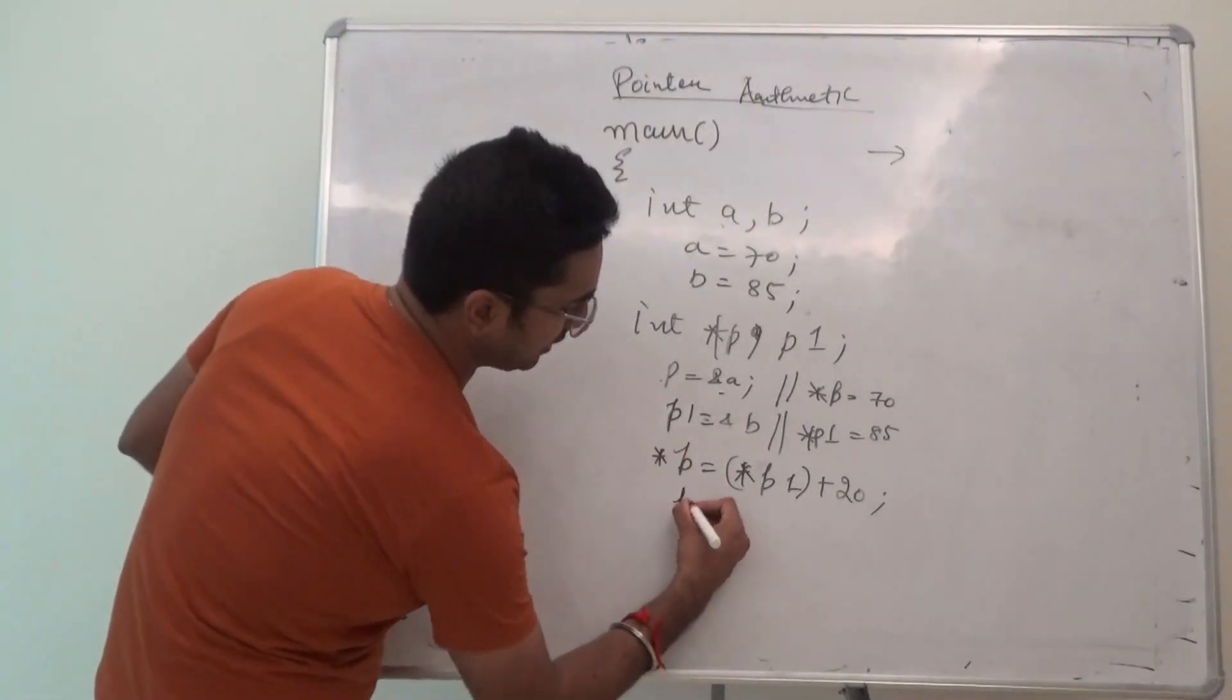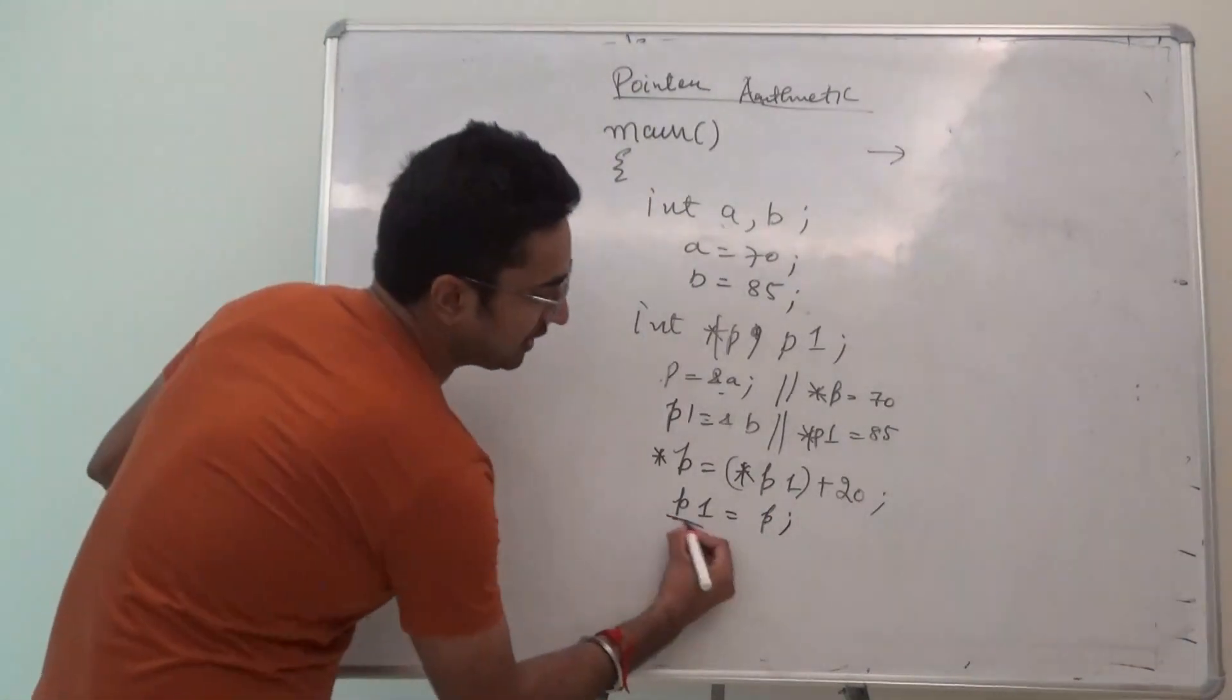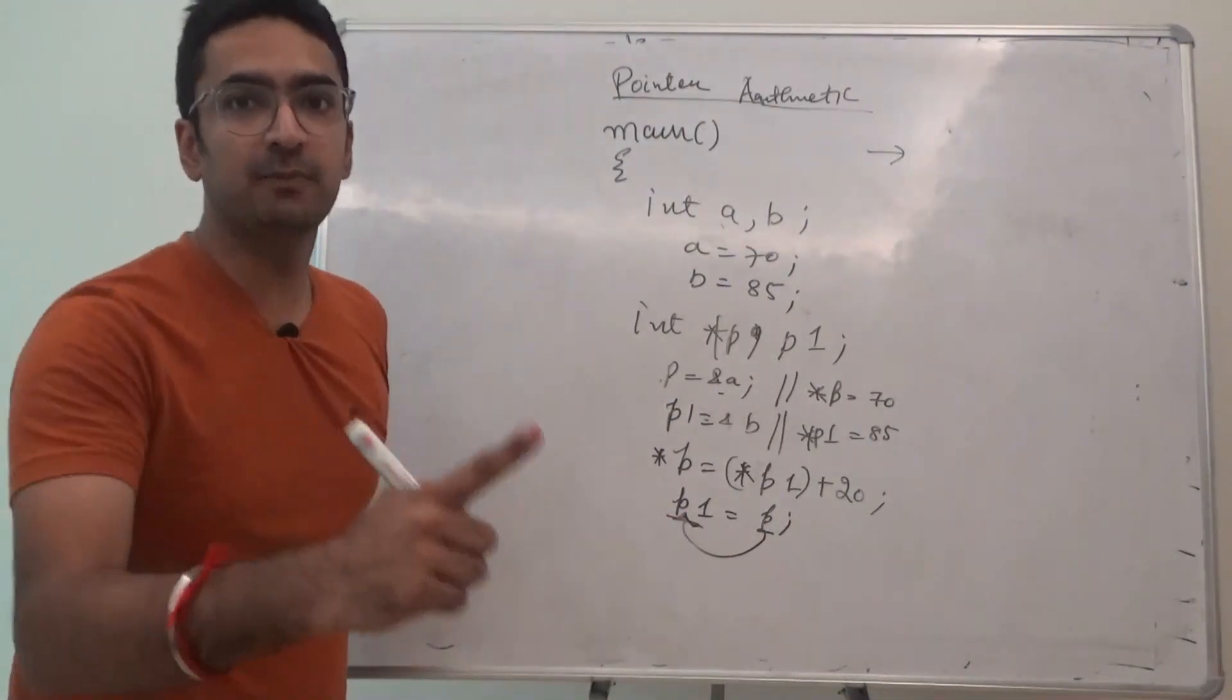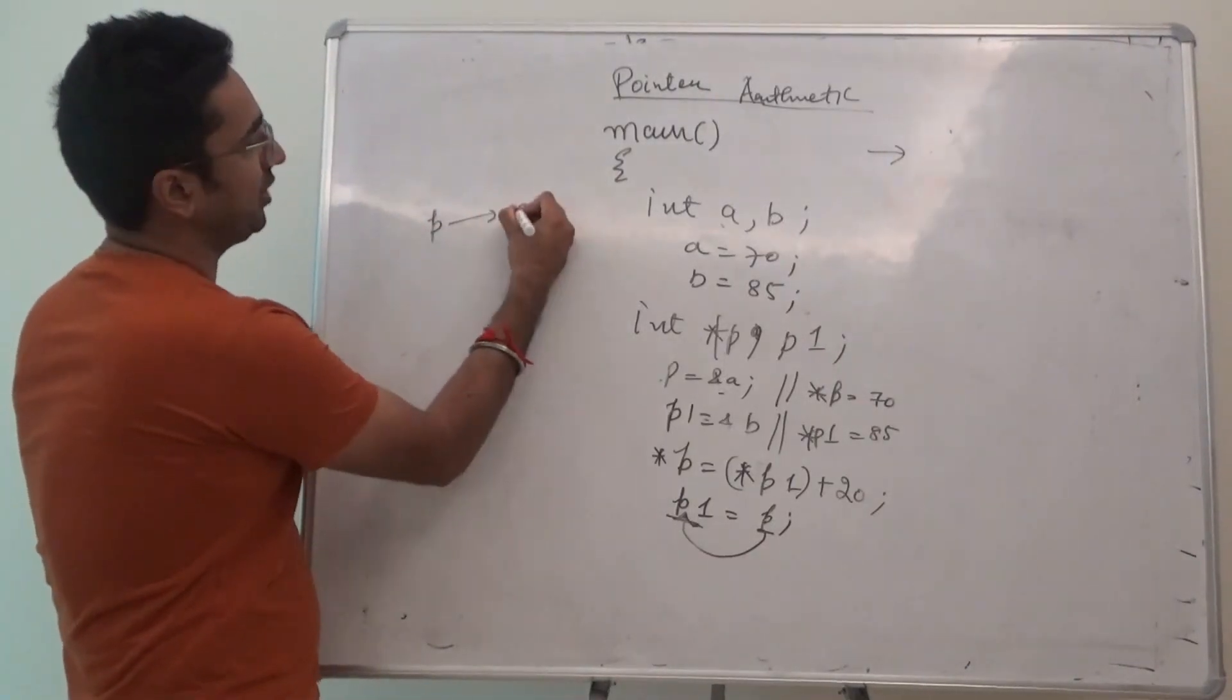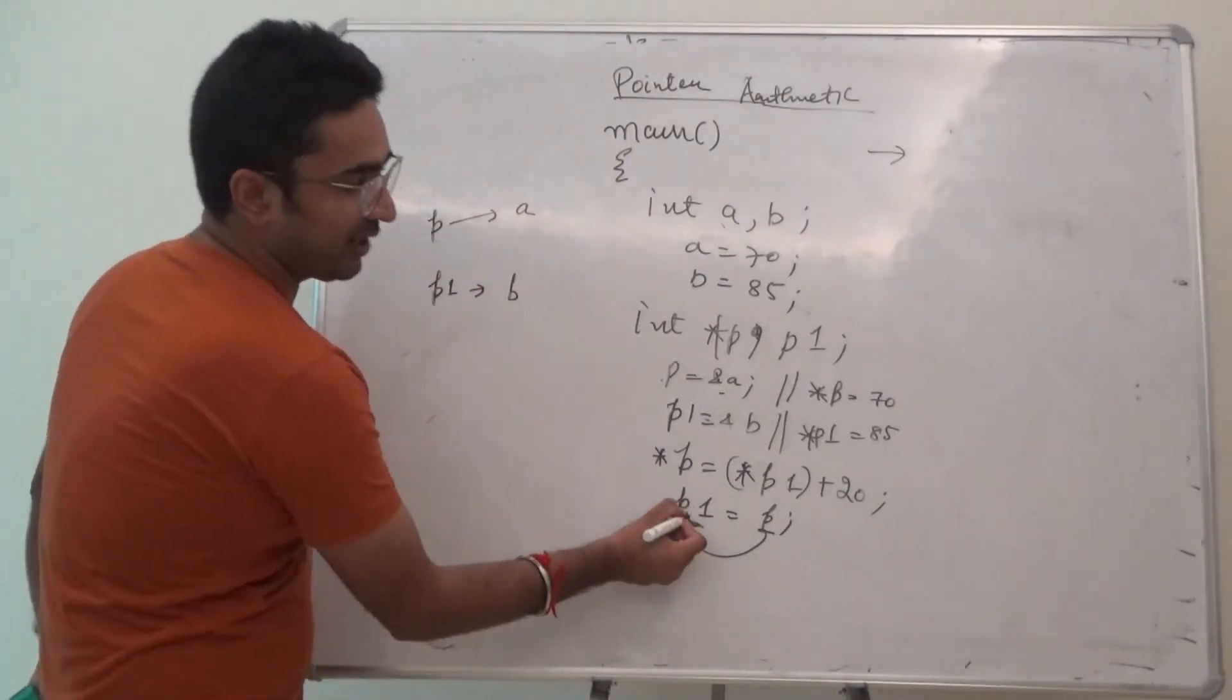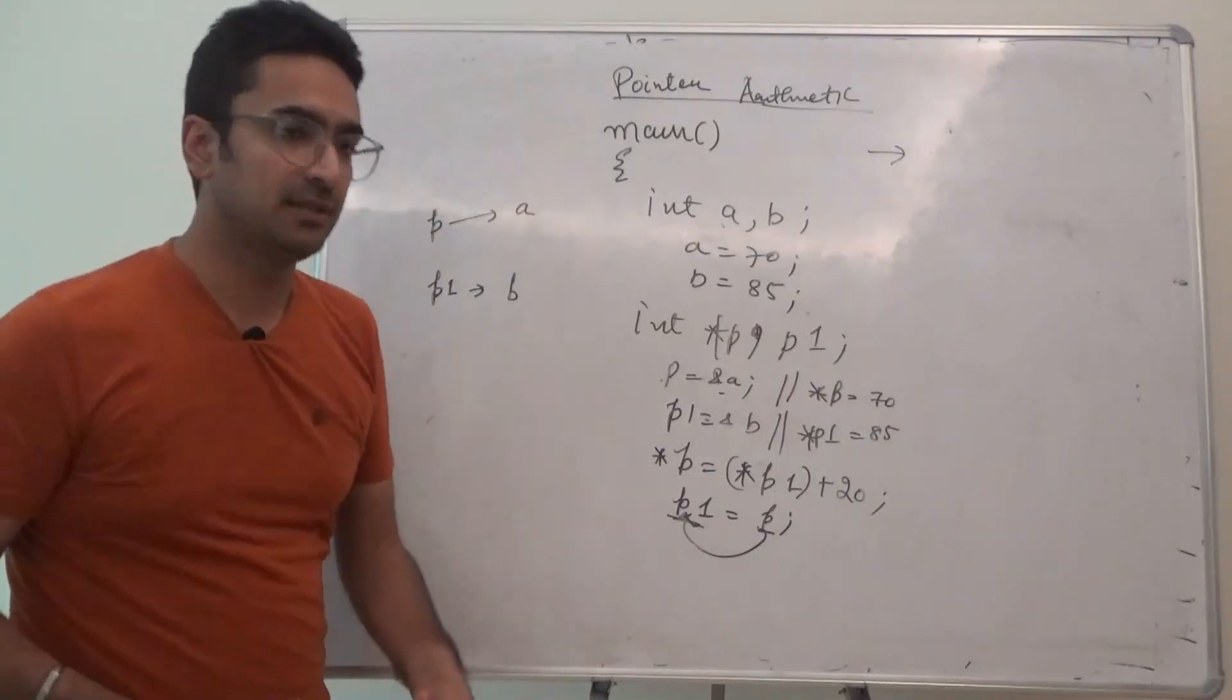Can I assign p1 is equal to p? Definitely you can assign the values, why? Because if p1 is equal to p, p is assigned to p1, it means p1 will point where p is pointing. It means over here, p is pointing towards a, p1 is pointing towards b. So, p1 will now point where p was pointing and p was pointing towards a. So, this can be possible.